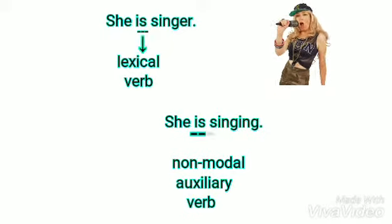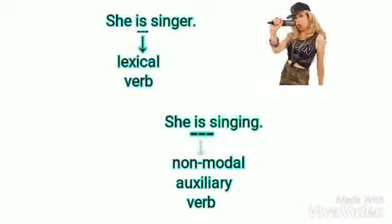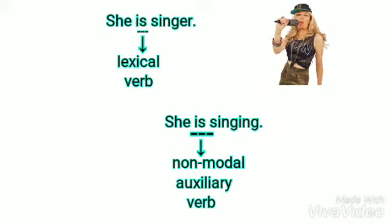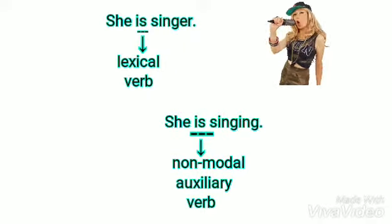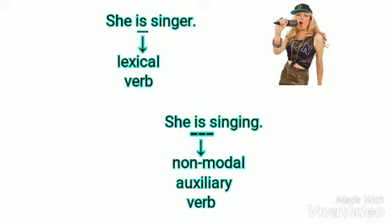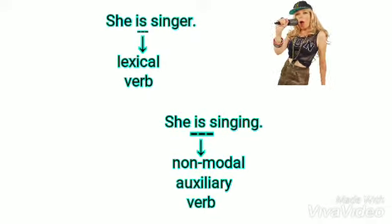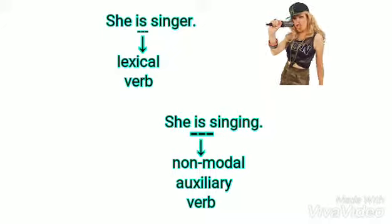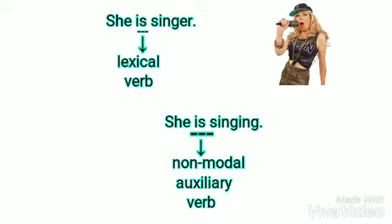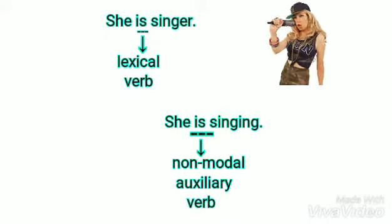For example: 'She is a singer.' Here 'is' is the main verb, so it is a lexical verb. 'She is singing.' Here 'is' comes as a helper with the main verb 'sing', so here it is a non-modal auxiliary verb.